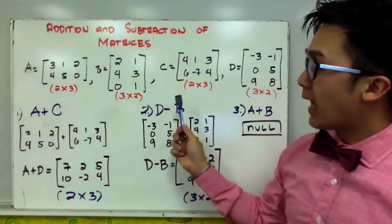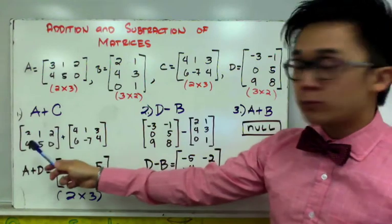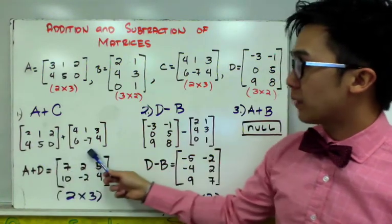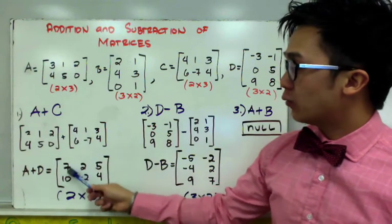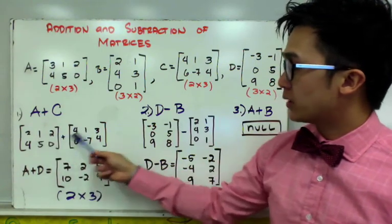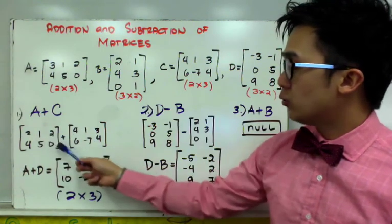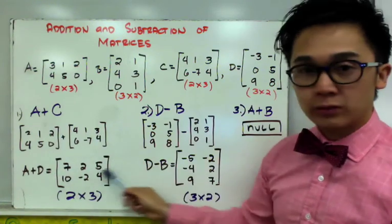we can simply add each entry or each corresponding entry of matrix A to matrix C. So we'll have 2 plus 4, which is 7, 1 plus 1, which is 2, 2 plus 3, which is 5, for our first row.